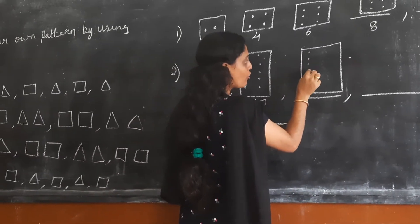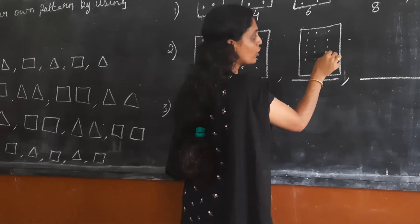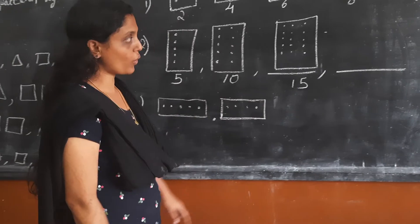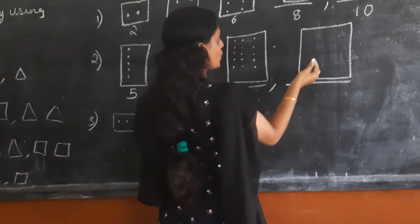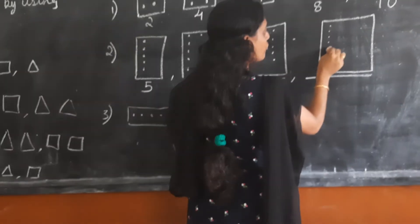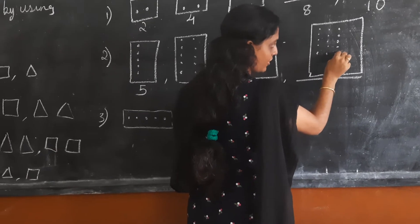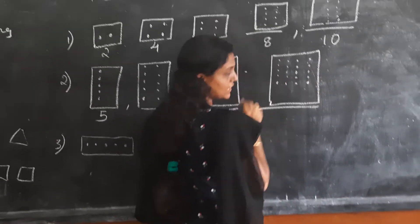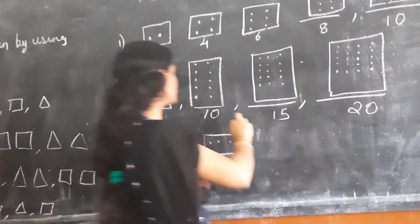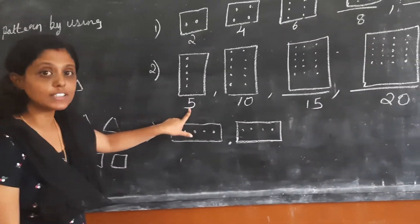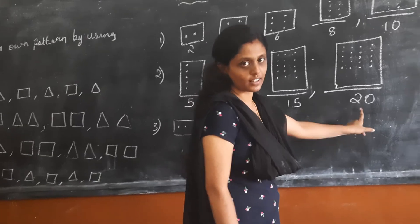Counting: one through fifteen — so fifteen dots. What comes next? We should add again five dots. Counting to twenty — twenty dots. Five dots we have added again. So the rule is five is increased, or five is added each time: five, ten, fifteen, twenty, like this.